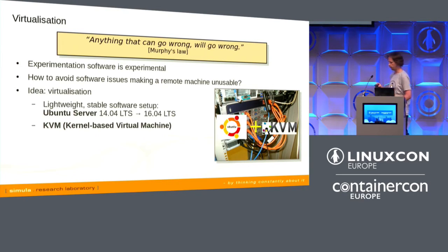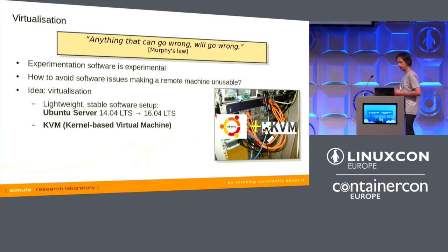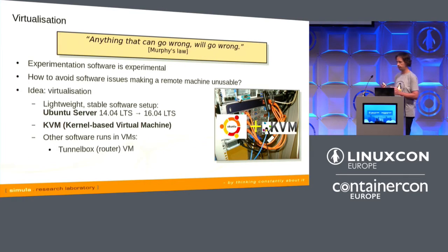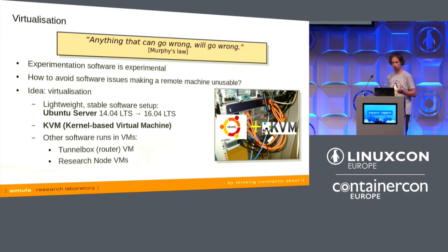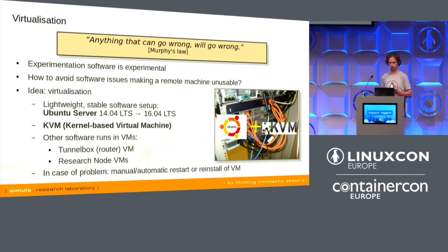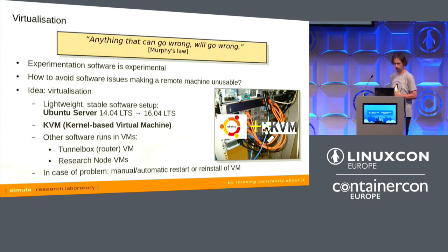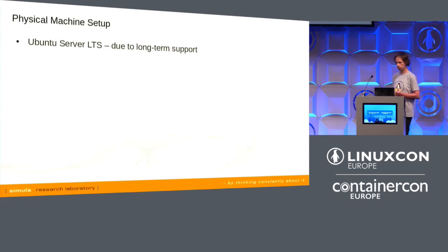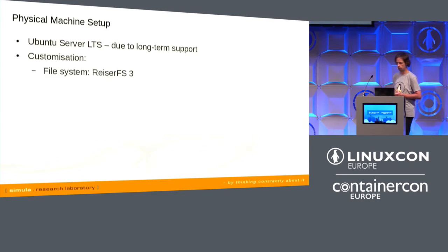Our solution is virtualization. The physical hardware gets a very lightweight installation of Ubuntu Server Linux. Everything more complicated and experimental runs inside KVM-based virtual machines — particularly routing functionality and testbed user experiments. If something goes wrong, we can log into the physical machine and fix the virtual machines by replacing or reinstalling them. We chose Ubuntu Server because of its five-year long-term support period.